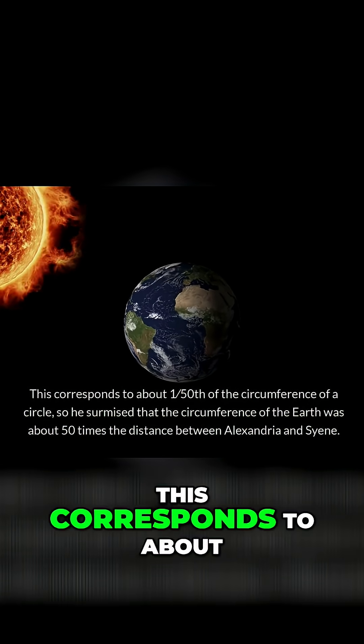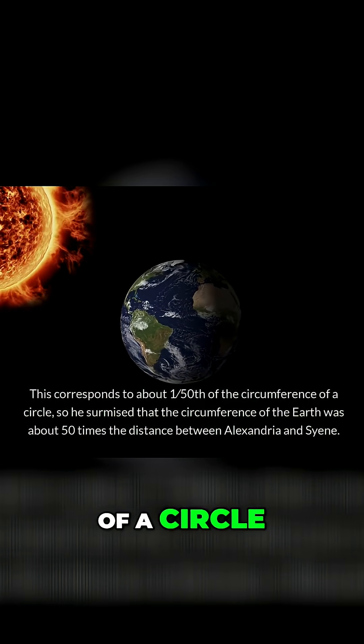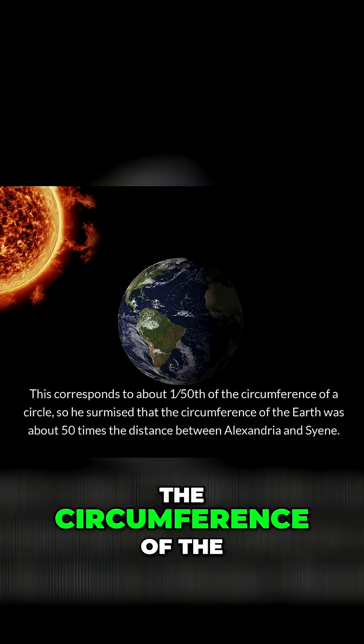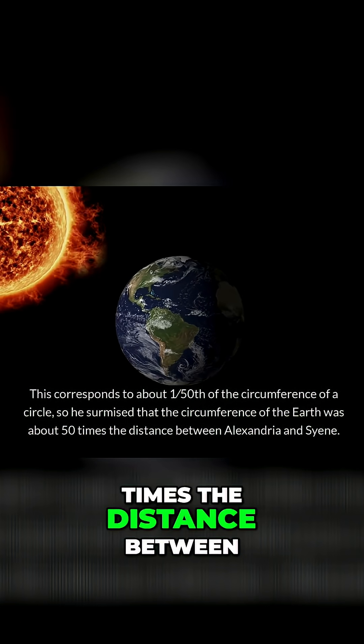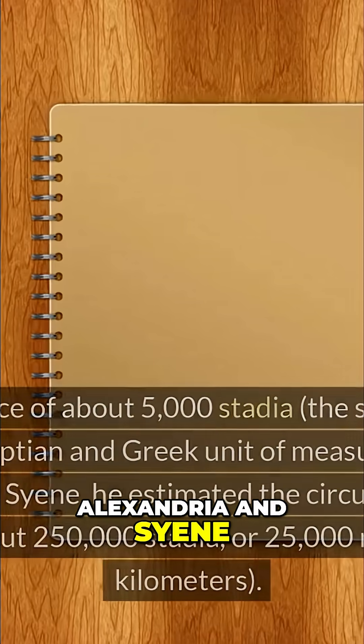This corresponds to about 1/50th of the circumference of a circle, so he surmised that the circumference of the Earth was about 50 times the distance between Alexandria and Syene.